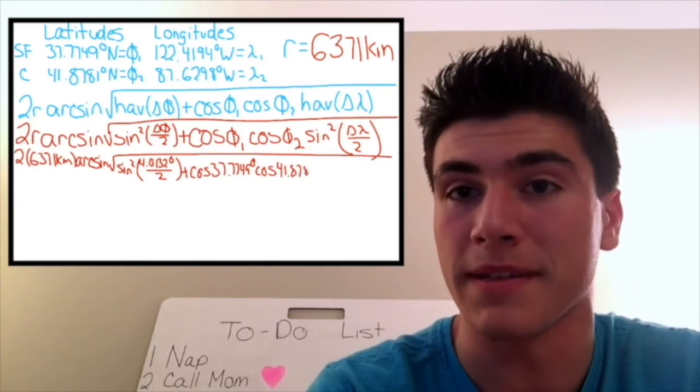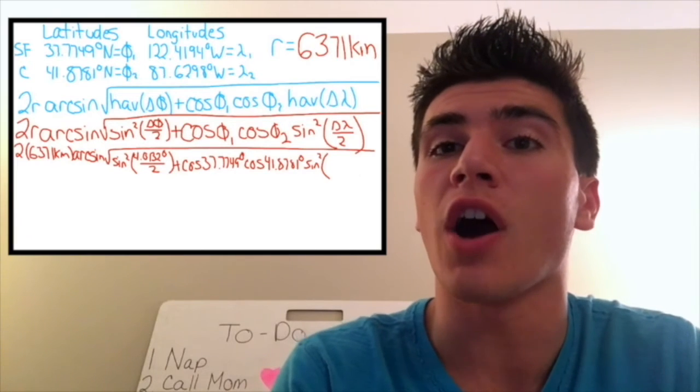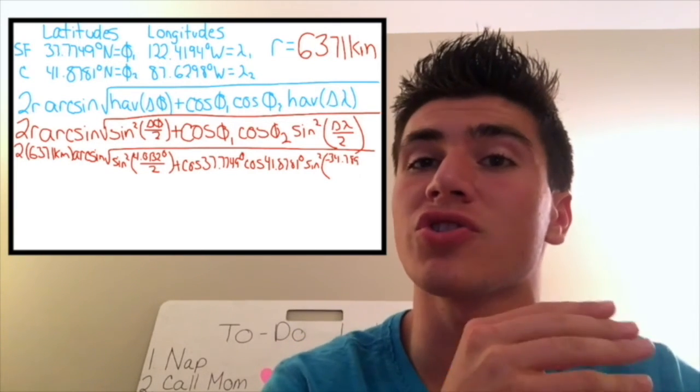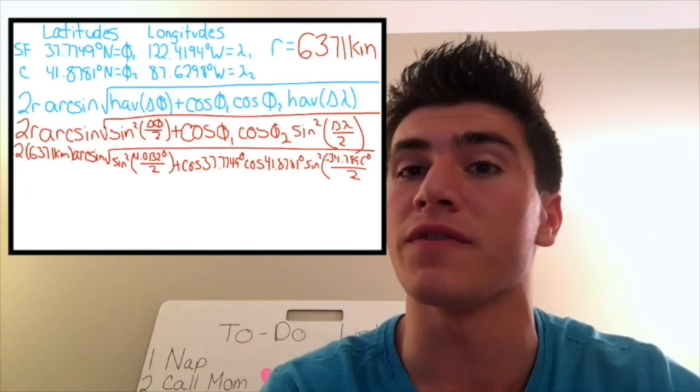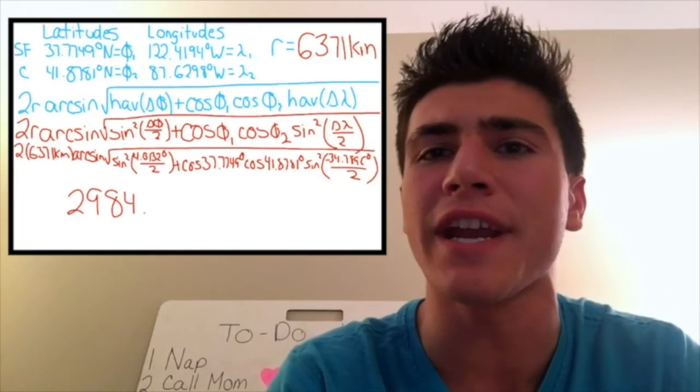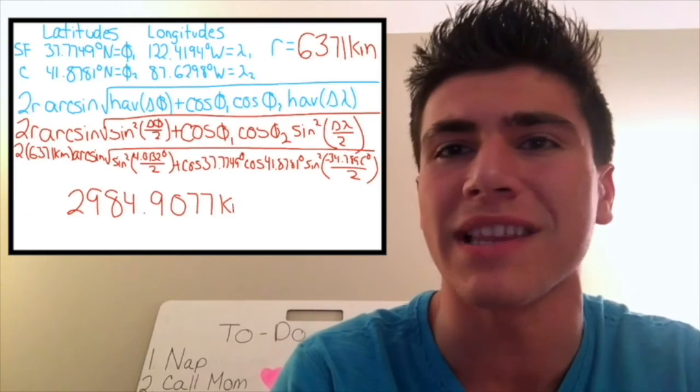both in degrees to keep consistent. Now, I need to reduce Haversine once more, to make it sine squared of Delta Lambda, which is Lambda-2 minus Lambda-1, so the longitude of Chicago minus the longitude of San Francisco, divided by 2. Plug that into my calculator, and I get 2,984.9077 kilometers.